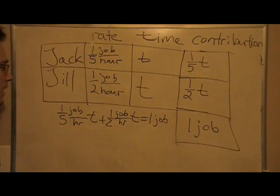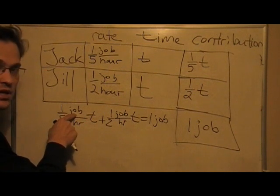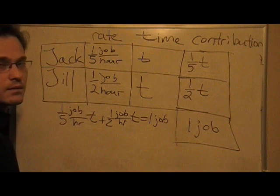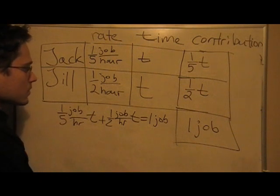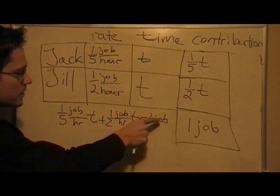Now, if you had, for example, the number five here, or the number two here, instead of the word job, then you could cancel that. Well, it's the same thing with units. You can cancel the job units. You can cancel job from here, from here, and from here.